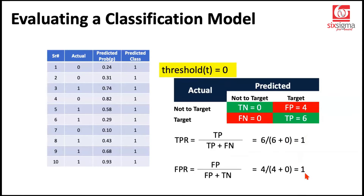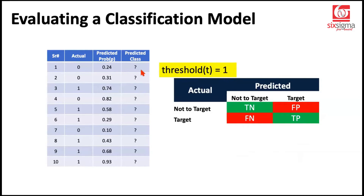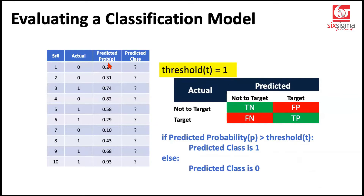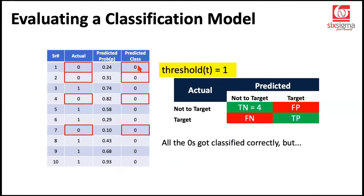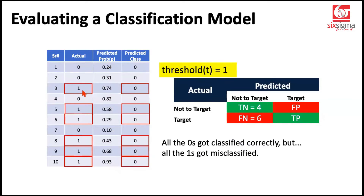Let's take another extreme — what if we change the threshold to 1? Since probabilities always range between 0 and 1, a probability can never exceed 1. So we are consistently going to predict zeros. We'll identify all the zeros correctly — true negatives, 4 out of 4. But we will misclassify all the ones from the ground truth. False positives and true positives are both zero because we never predicted anything as positive.